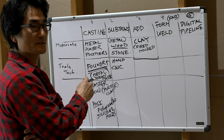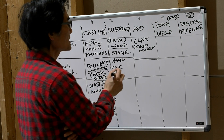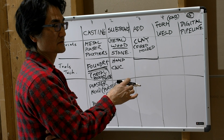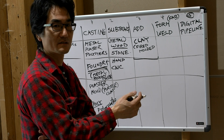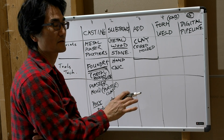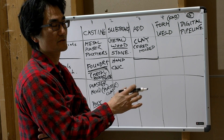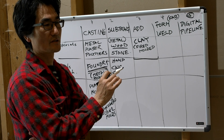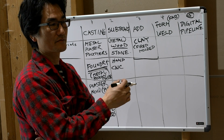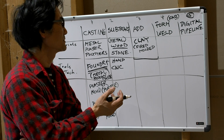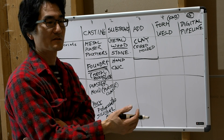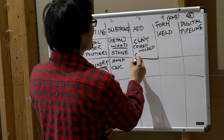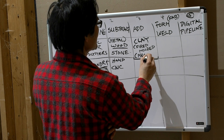The other additive processes that I will be working with: there is a category of welding which you could consider as an additive process. The way that I have used the MIG welder in particular, and to some degree the TIG welder — although the TIG I use quite a bit for blending the metals more than for forming or adding — but for the MIG welder, I use it quite a bit as a method of additively forming metal form. So we'll put MIG welding as a maybe.